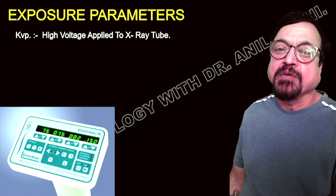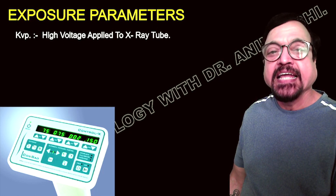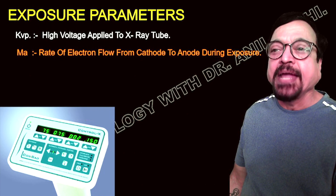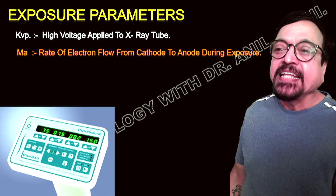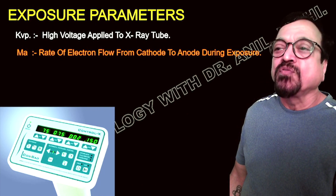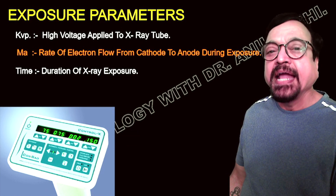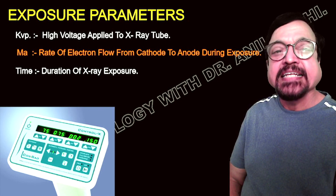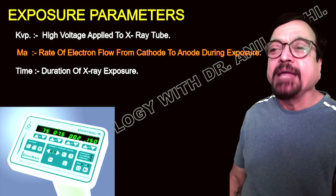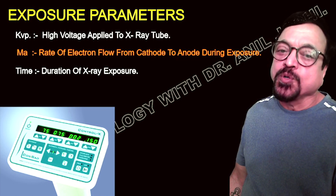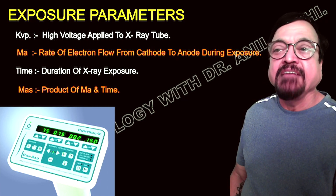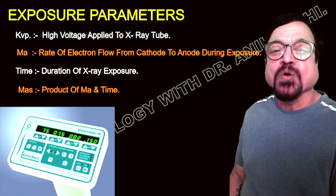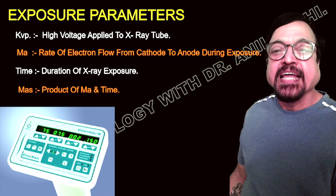The exposure parameters are: kV — the diagnostic range is 40 to 120 kV, with 60 to 80 kV being most commonly used; mA — the rate of electron flow from cathode to anode during exposure (increasing mA increases the number of x-rays/electrons); and time — the duration for which the exposure is on. These three — kV, mA, and time — are the basic exposure parameters.